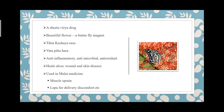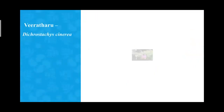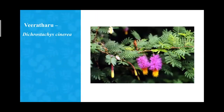In Malay medicine, the leaves with coconut oil are used for swedana over muscle sprains and as a palliative in delivery discomfort over the abdomen. It shows anti-inflammatory, antimicrobial, and antioxidant properties. It can be seen in scrub jungle ecosystems and has a very beautiful flower.